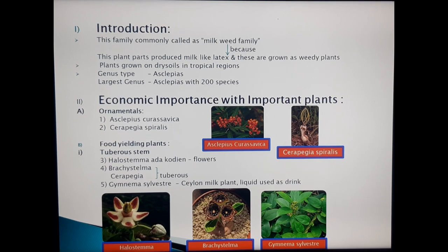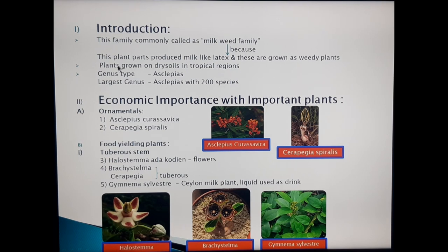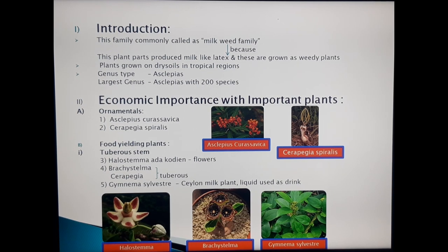Introduction of the Asclepiadaceae family: this family is commonly called the milky weed family, because from these plants' stem and leaves, milk-like latex is produced, and most of these plants grow as weedy plants. These plants grow on dry soils in tropical regions. In this family, the type genus and largest genus are both the same plant — Asclepias — with around 200 species.